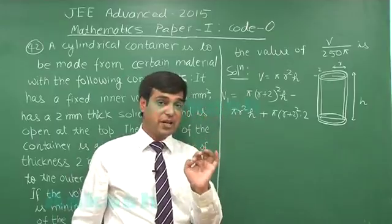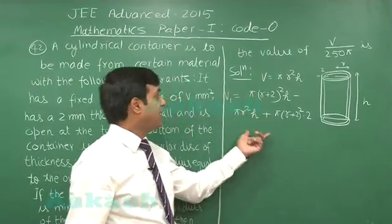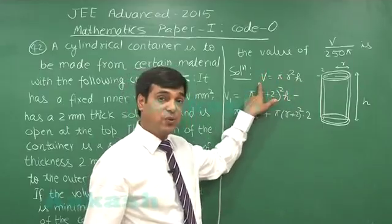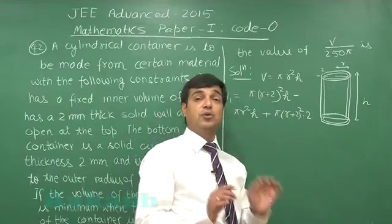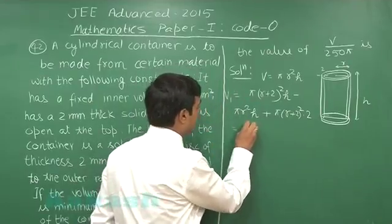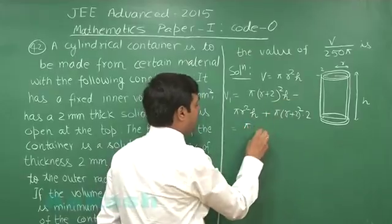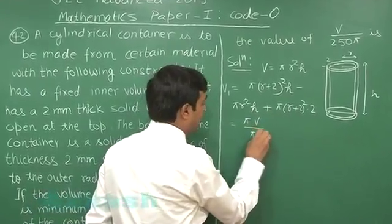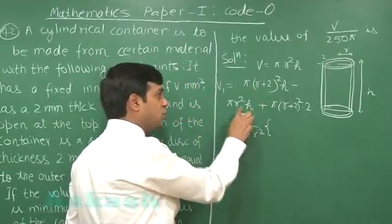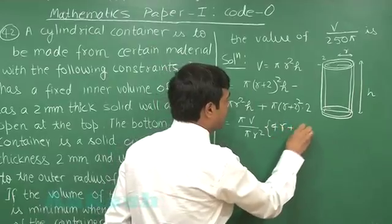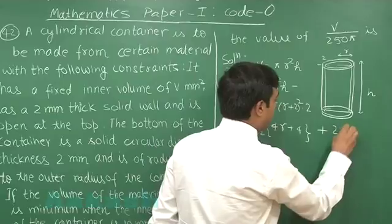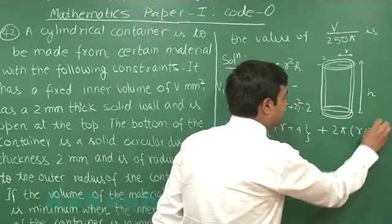So simply differentiate it with respect to the radius r. We can replace h from the given constraint h equals V upon pi r² and then differentiate with respect to r in order to minimize. So first let us replace h, h can be written as V upon pi r². The remaining term inside these two brackets simply 4r + 4 plus 2 pi(r+2)².